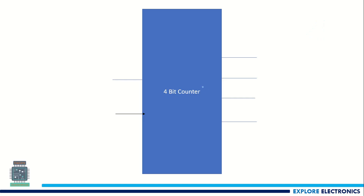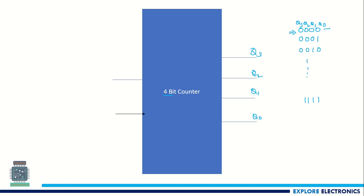In the 4-bit counter, we will be having 4 outputs: Q3, Q2, Q1, Q0. This 4-bit counter will count values from 0000 up to 1111. Initially the counter value will be 0000, then it will count to 1, then 2, and similarly continues up to 15. Once it reaches the maximum value 1111, again it will come back to 0, and start counting from 0 again to 15.